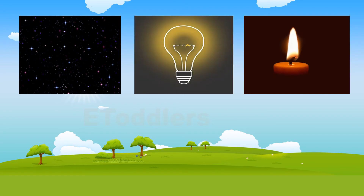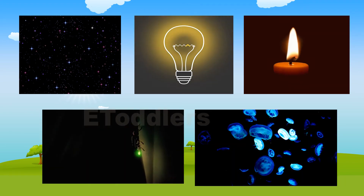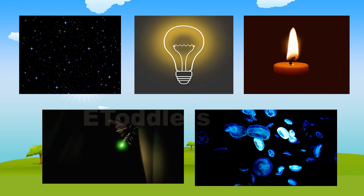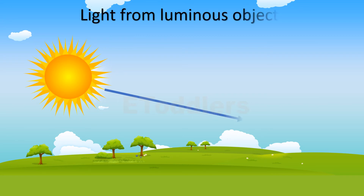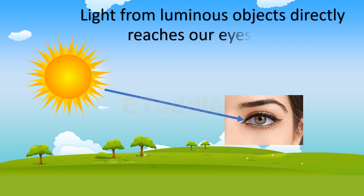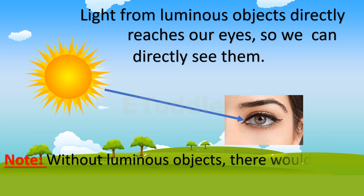Not just non-living objects — even some species of living organisms, such as fireflies and jellyfish, have light of their own. Light from luminous objects directly reaches our eyes, so we can directly see them. Without luminous objects, there wouldn't be any light produced or emitted.